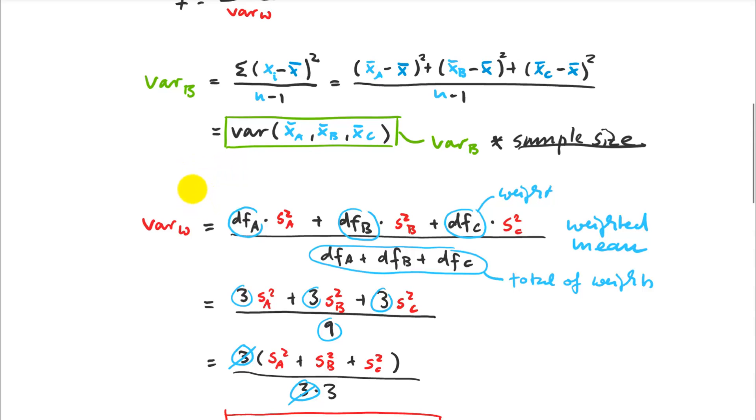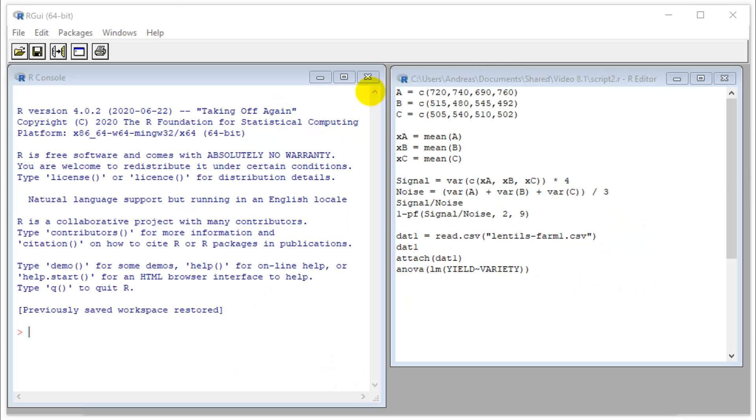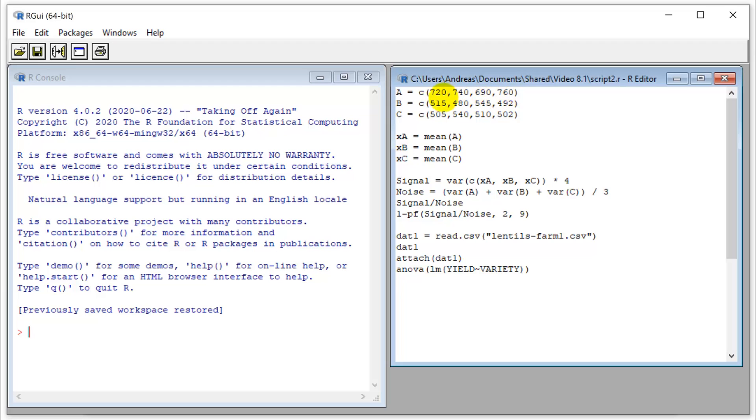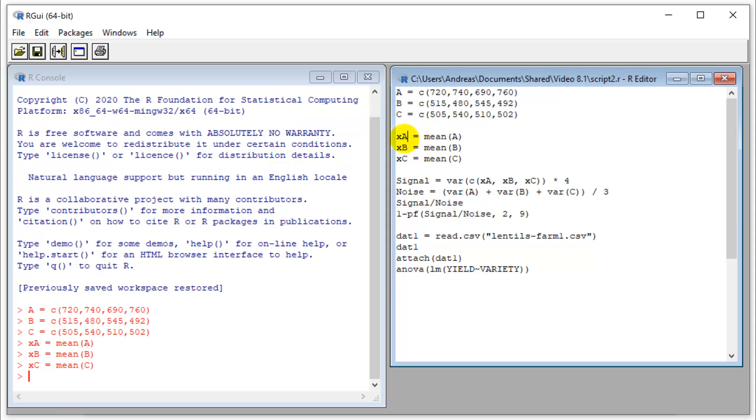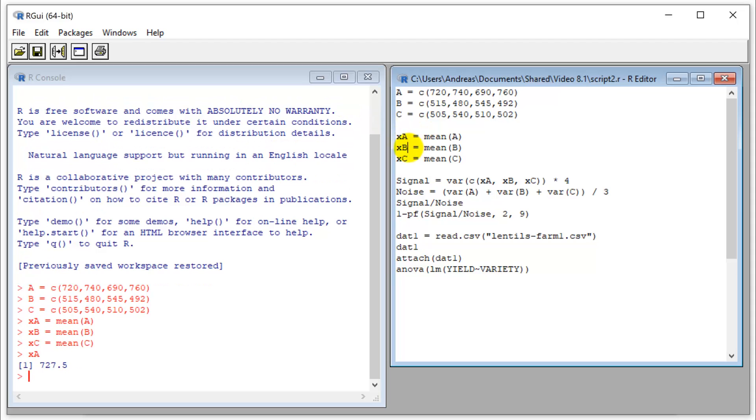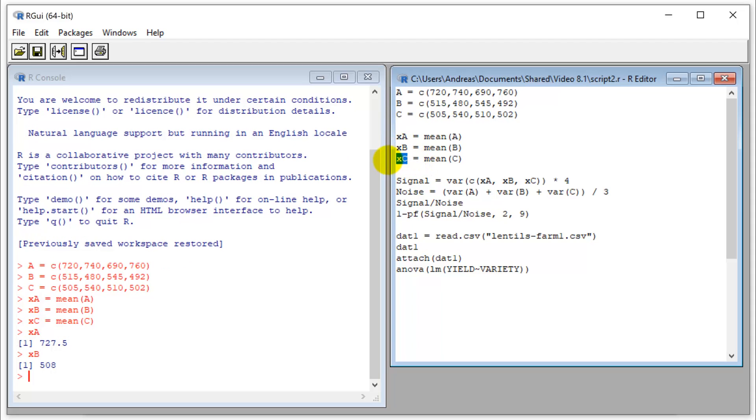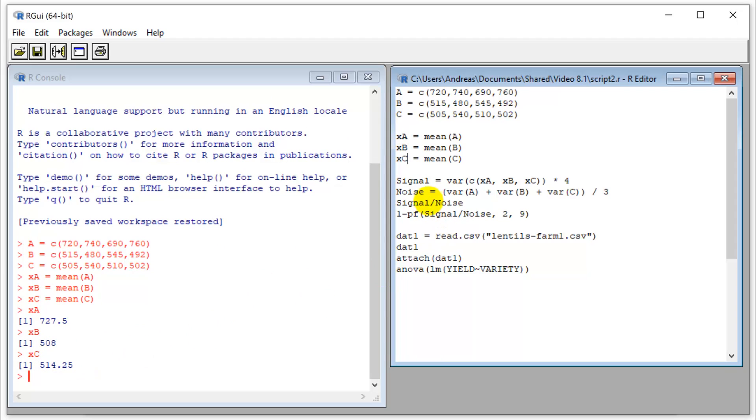Okay, let's now see if we can get this to work in R. We start by reading in the data. Those are our numbers from the experiment for each of those treatment plots, A, B, and C. We calculate the means of those three varieties. Let's just check what they are: 727, 508 and 514. First we calculate the signal, that was just a variance of my means. I multiply by four to undo the central limit theorem effect. Let's execute that.